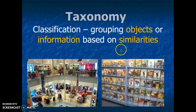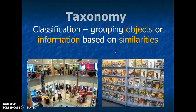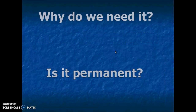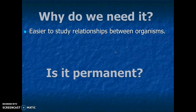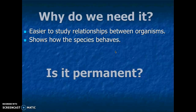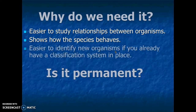So if you go to Walmart to buy a TV, you will probably go to the technology department. If you want to buy kitchen supplies, you will go to the kitchen department. If you want to buy toys, you will go to the toys department. We like to classify things based on their similarities, and the same thing happens with organisms — we like to classify them based on what characteristics they share in common. Why do we need to do this? It makes it easier to study the relationship between organisms. In many cases, it's going to show how these species are going to behave with one another. It also makes it easier to identify new organisms if you already have a classification system in place. Every single year we discover new species.